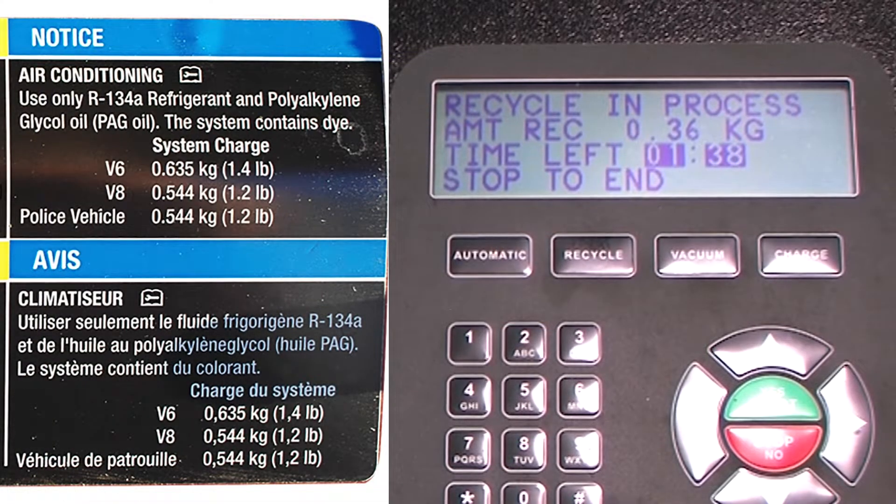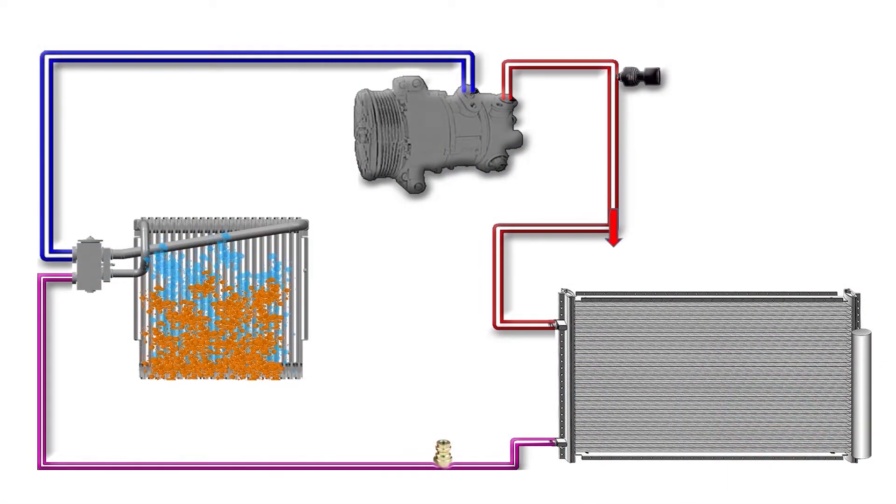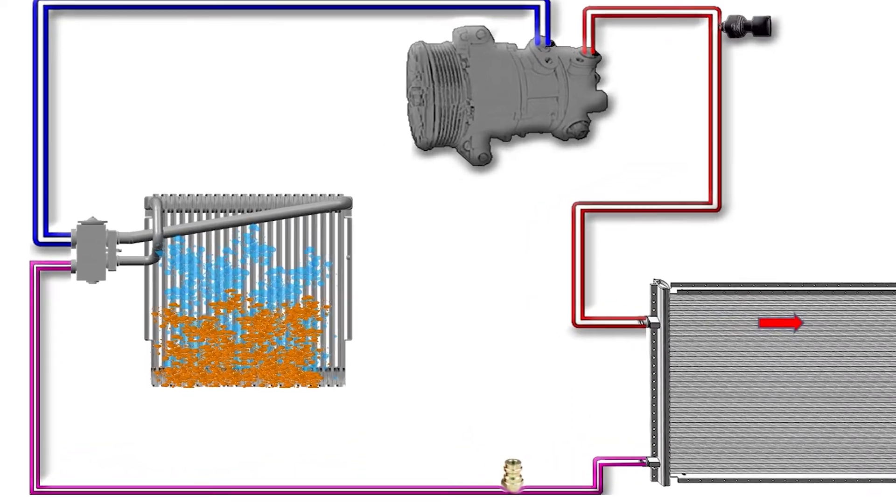All air conditioning systems gradually leak refrigerant over time. As the liquid refrigerant level in the evaporator drops, oil drops out of circulation and pools at the bottom of the evaporator.